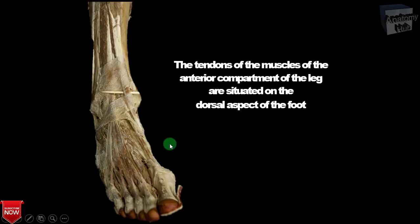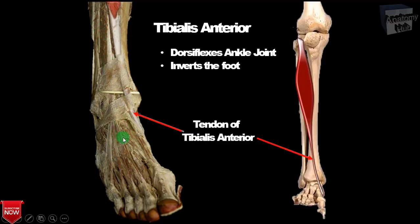Here you can see the dissected part of the dorsum of the foot. The tendons visible here mainly belong to the muscles of the anterior compartment and the lateral compartment of the leg, situated on the dorsal aspect of the foot. The first muscle we will see is the tibialis anterior muscle.